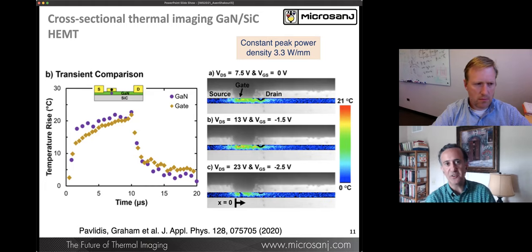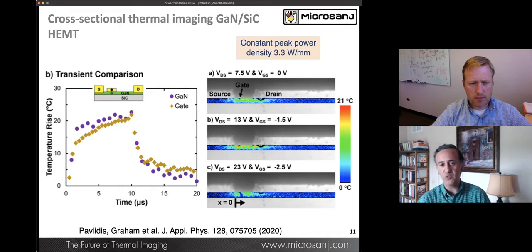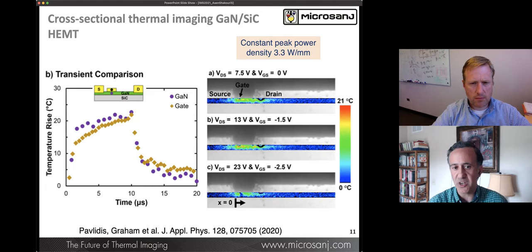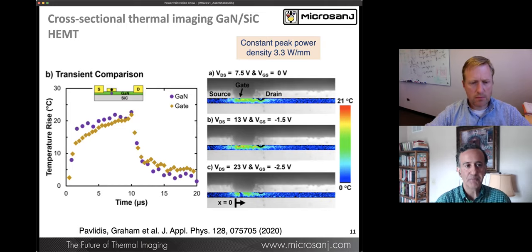On the right hand side, the same power is applied in the three cases, A, B and C. The same power of 3.3 watt per millimeter. But you can see that the V-gate source goes from 0 to minus 1.5 to minus 2.5. So you can see as you go to the pinch off how the distribution of heat changes. There's been quite a bit of modeling work, and this is one of the first times we can visually see what happens in this type of device.